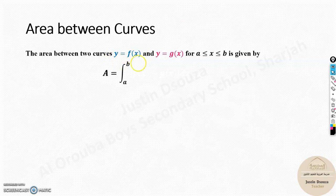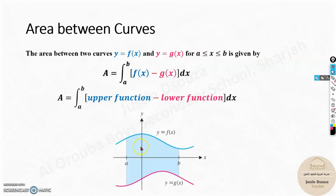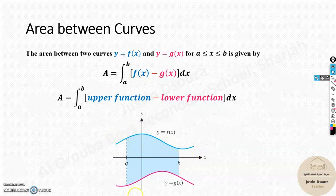You have been given two functions, y equals f of x and y equals g of x. The functions can be anything — it's not a definite shape. If you have a definite shape like a square, triangle, or rhombus, we can find the area using formulas. But here, it's just a curve. We know the function of the curve, and there's another curve. We need the area between these two. If we definite-integrate the upper function between the limits,